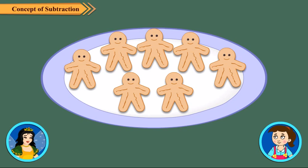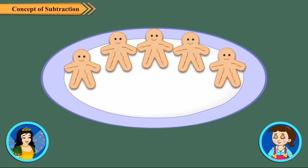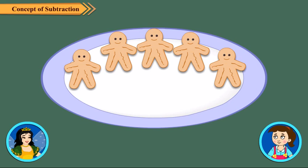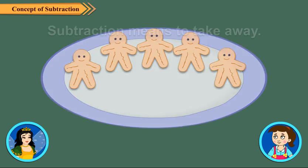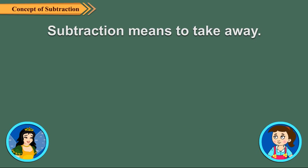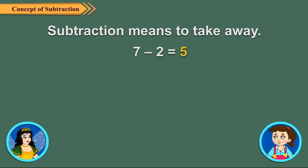We use subtraction when we take away something from a collection. There are seven cookies in the plate — this is a collection. Now if I remove two cookies from the plate, it means they are taken away. Now count how many are left. Five. Subtraction means to take away. Seven minus two is equal to five.